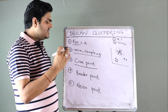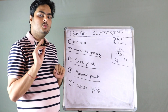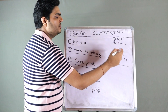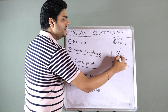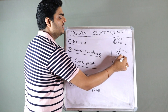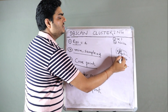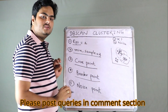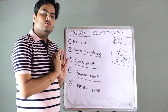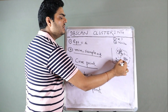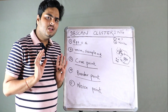The next term is border point. A border point is a point which is not a core point, but if you draw a circle of radius epsilon from that border point, at least one core point falls inside that circle. So to summarize: a border point is not a core point, but it has at least one core point within its epsilon radius.